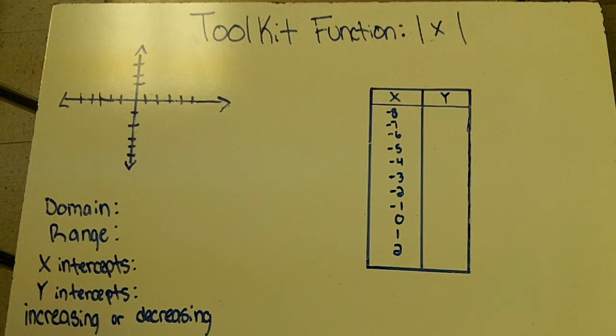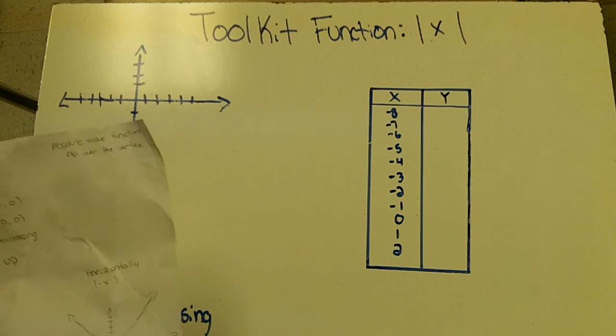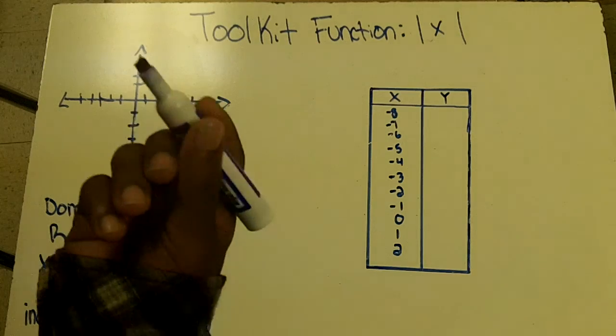Okay, this is James with the toolkit function absolute value of X. When you put it in the calculator, it's graphed like this.